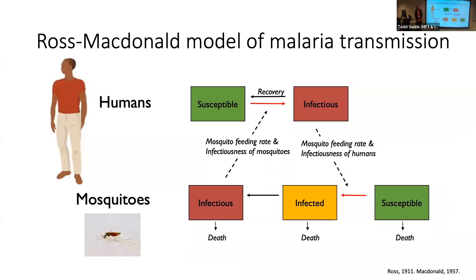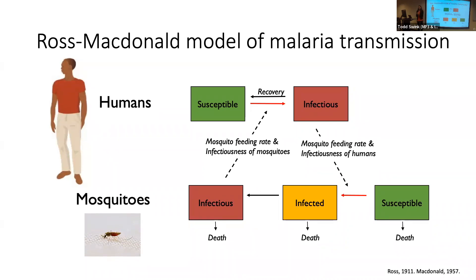Mathematical models have been a tool used for over a hundred years to think about malaria transmission. Ronald Ross had the hallmark compartmental model back in 1911 to think about how to stop malaria transmission. This is a slightly expanded version — the Ross-McDonald model — where George McDonald in the 1950s added components. We divide humans into susceptible and infected, and mosquitoes into susceptible, infected, and infectious.